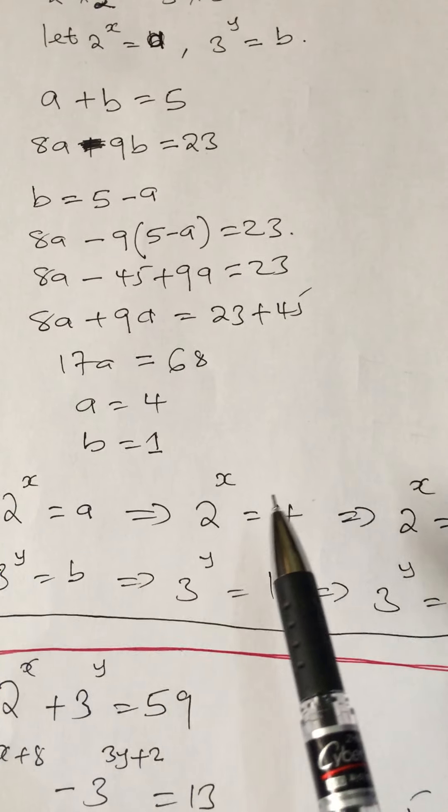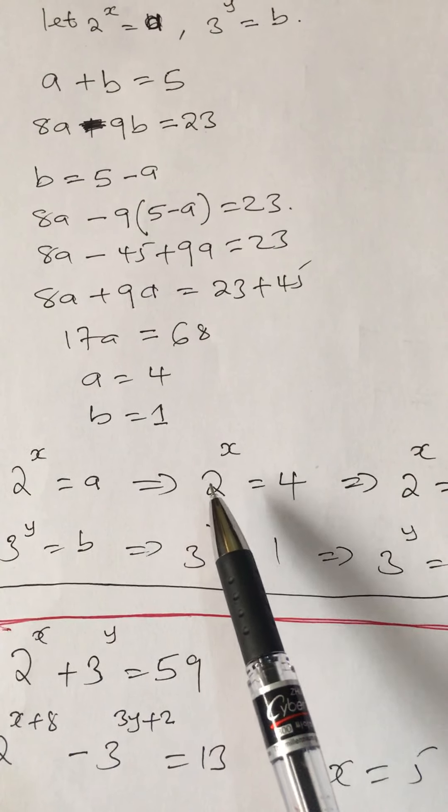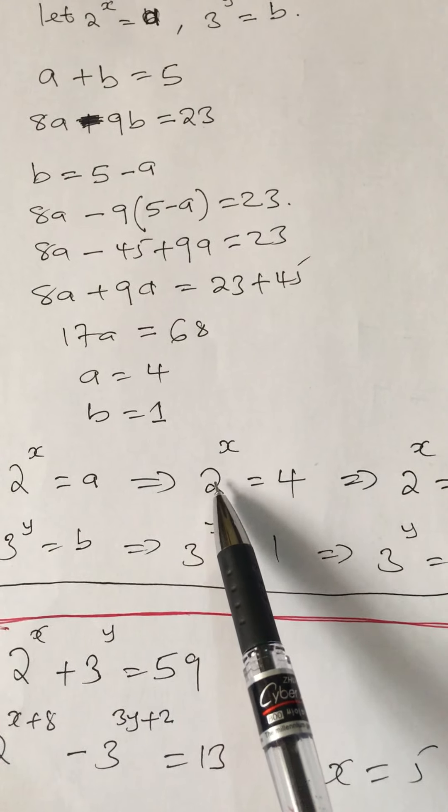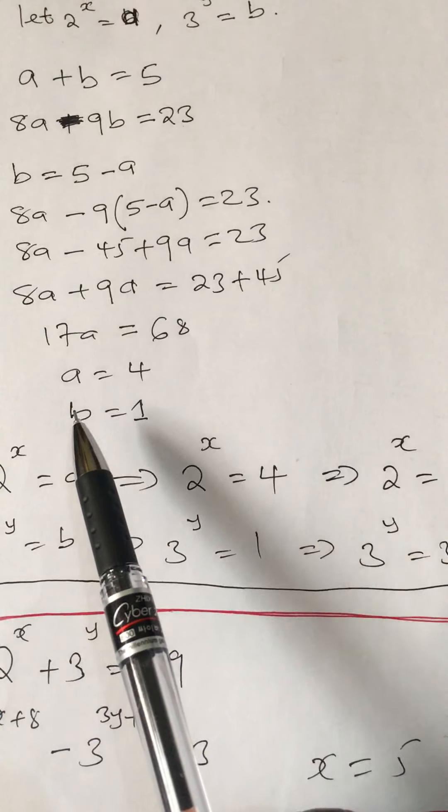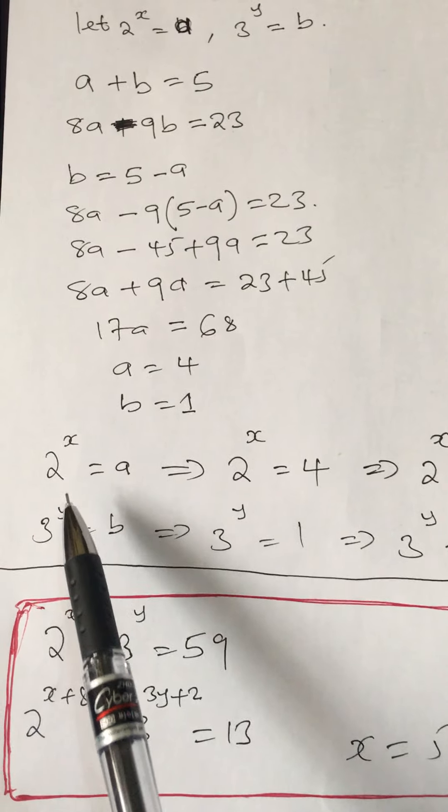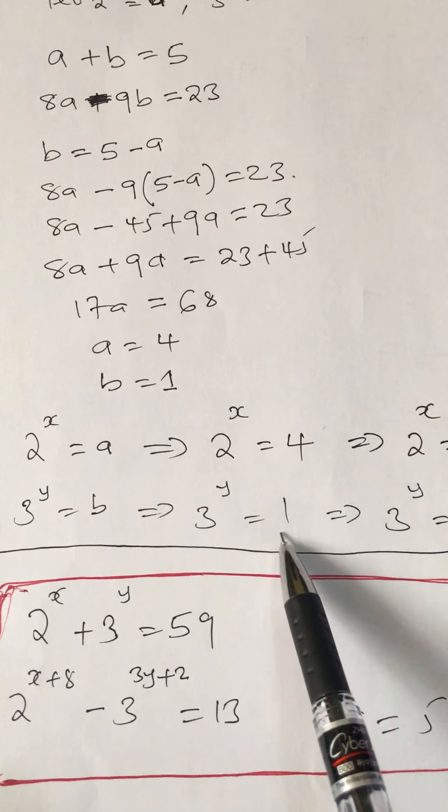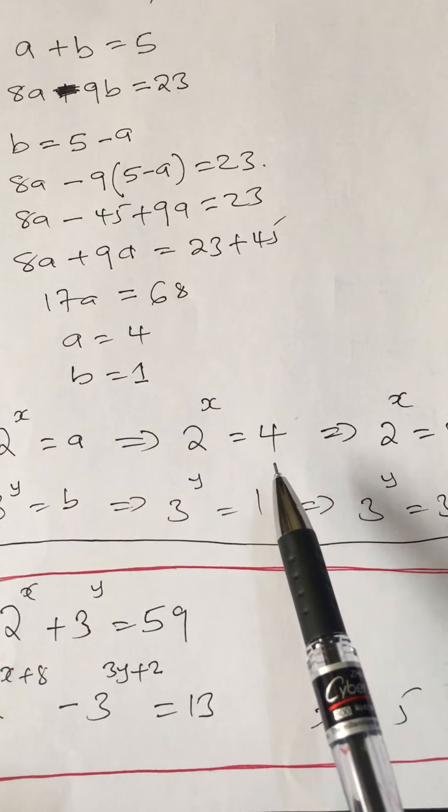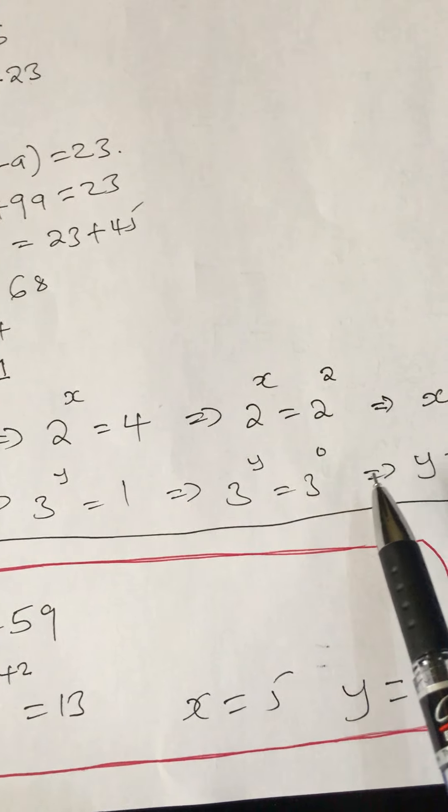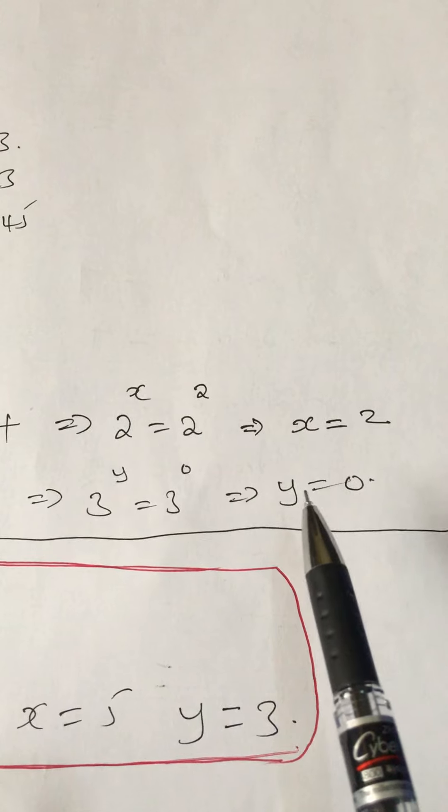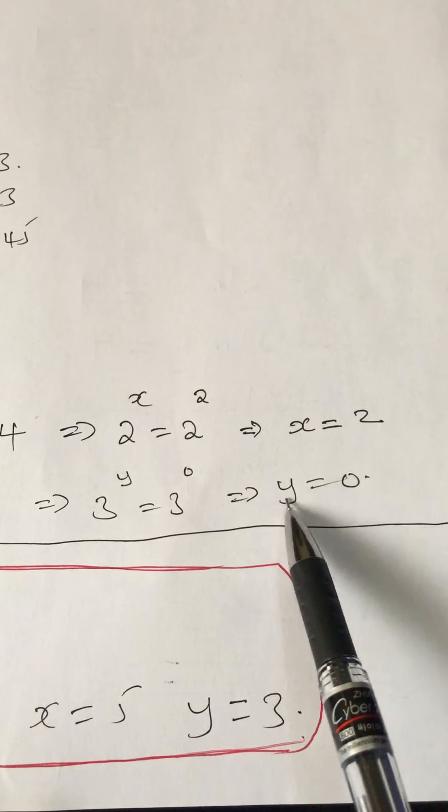This is where I said, supposing we got a value like 5, then the equation would include logs: log 2 raised to x equals log 5, because I couldn't relate 2 and 5 in terms of indices. But for this one it was clear. We got the value of b as 1. 3 raised to y was the same as b, so 3 raised to y equals 1. But 1 in indices is the same as any number raised to 0. So 3 raised to y equals 3 raised to 0. If the bases are the same, we compare the powers: y equals 0. The two values were x equals 2, y equals 0.